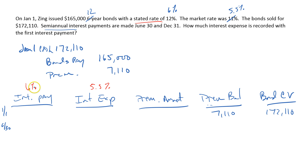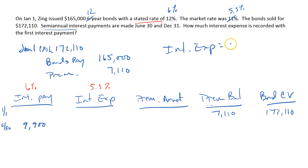So 6% of $165,000 — the face value of the bond — is $9,900. That's how we get the interest payment, and in fact the interest payment is never going to change; it's going to be $9,900 all the way through. The interest expense, however, is going to change. This is where the shortcut could have come in.